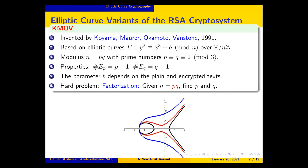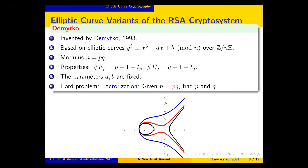Another RSA variant based on elliptic curves is called Demytko, invented by Demytko. It is based on general elliptic curves with the complete equation mod n, where n is the RSA modulus — the product of two large primes p and q. The number of points modulo p equals p+1−tp, and modulo q equals q+1−tq; finding tp and tq in general is very difficult. The parameters a and b are fixed, and the hard problem is again the factorization problem.